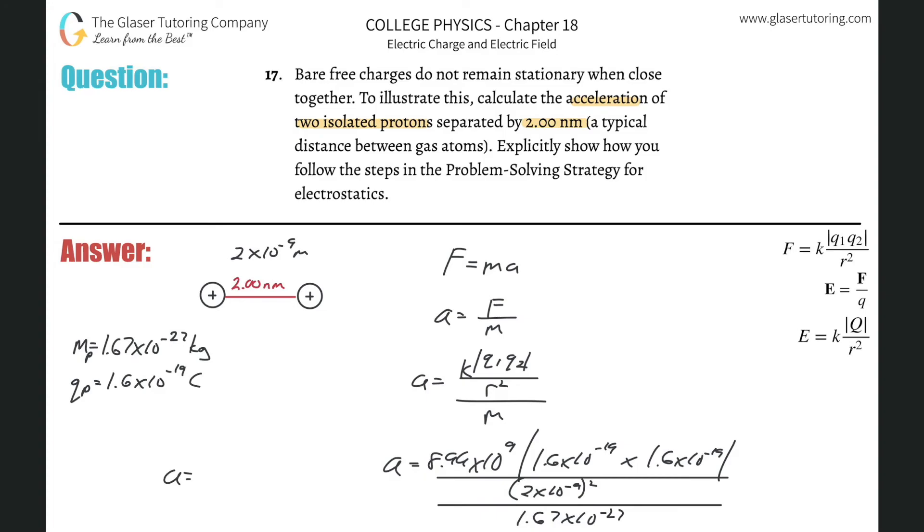And all we got to do is just plug it all in. So 8.99 times 10 to the nine multiplied by 1.6 times 10 to the minus 19, and that's essentially squared, then divided by two times 10 to the minus nine, that's squared. And then divide that by 1.67 times 10 to the minus 27. And we have a tremendously large acceleration. That's what they're trying to show. This is 3.45 times 10 raised to the 16th meters per second squared. Yeah, that would be pretty interesting.